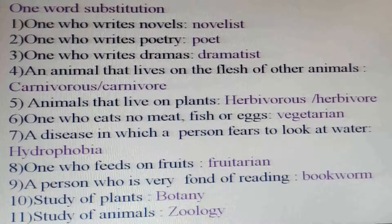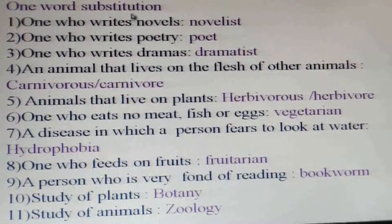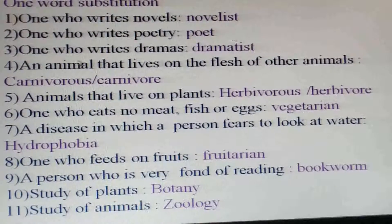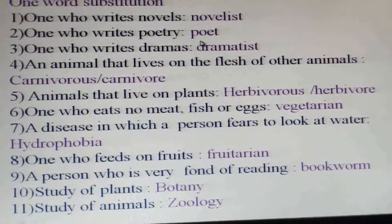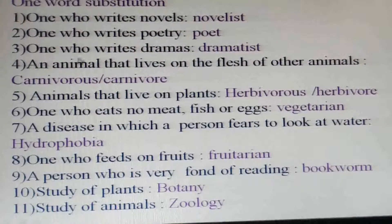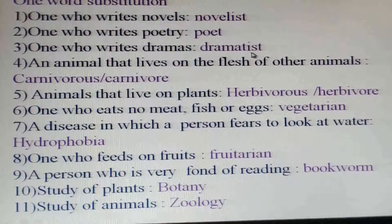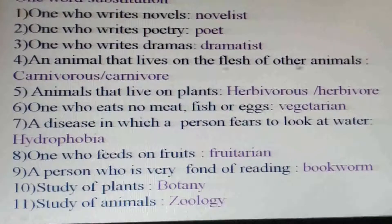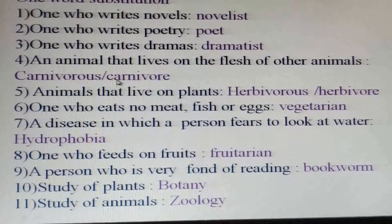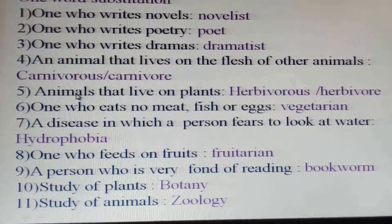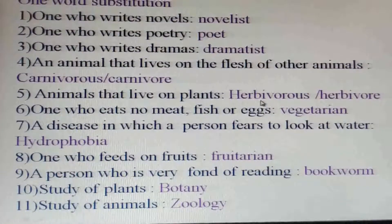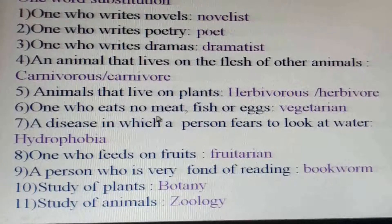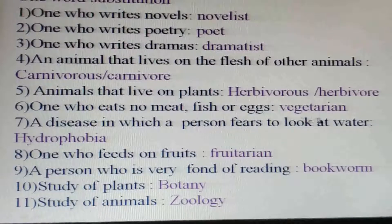Here are a few more examples of one word substitution. One who writes novels: novelist. One who writes poetry: poet. One who writes dramas: dramatist. An animal that lives on the flesh of other animals: carnivorous or carnivore. Animals that live on plants: herbivorous or herbivore. One who eats no meat, fish, or eggs: vegetarian.